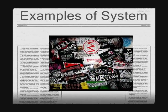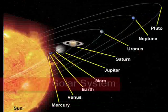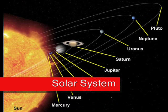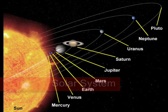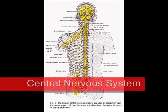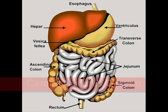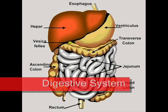Examples of a system: our solar system, our body's central nervous system, and our digestive system.